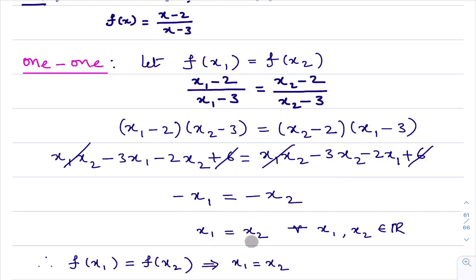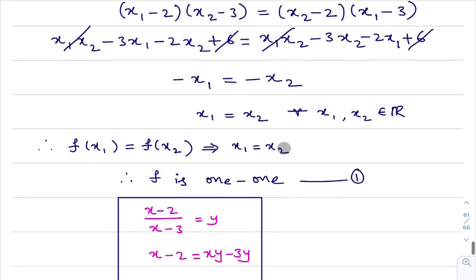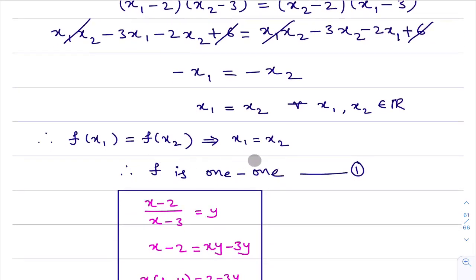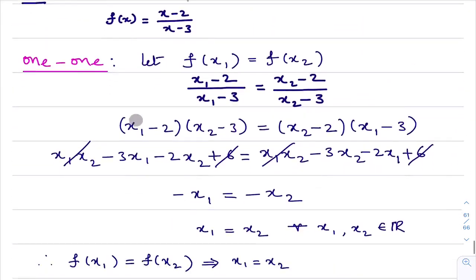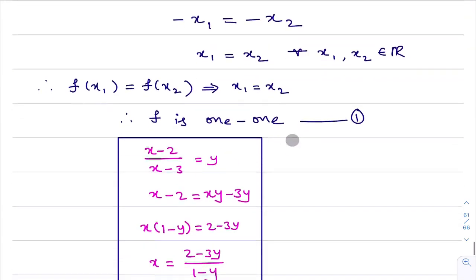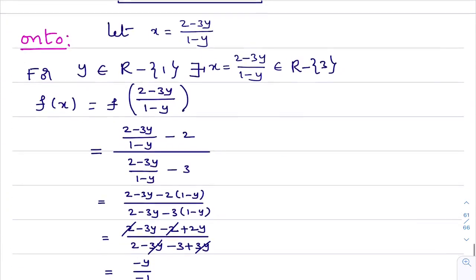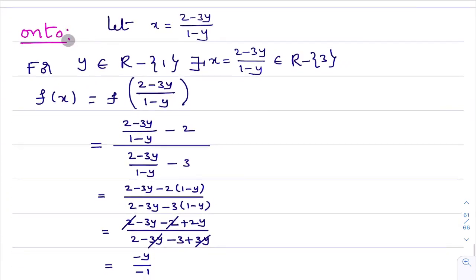We started with f(x1) = f(x2) and after simplification we got x1 = x2. Therefore, f(x1) = f(x2) implies x1 = x2, so we can say the function is a one-one function. Now I need to prove this function is also an onto function.